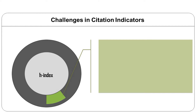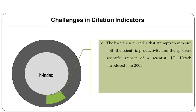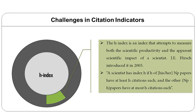One of the popular indicators is the H-index. The H-index is an index that attempts to measure both the scientific productivity and the apparent scientific impact of a scientist. It was developed by J.E. Hirsch in 2005. He defines it as: a scientist has an index H if his or her NP papers have at least H citations each, and the other NP-H papers have at most H citations each. The Web of Science and other citation databases now give direct access to H-index, and this is becoming quite popular.